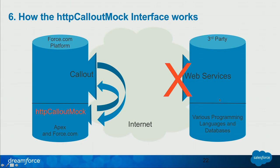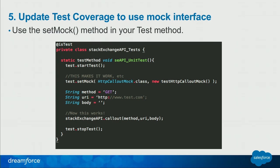On a high level, when we run our tests, instead of going out to the internet and calling the other web service for real, we stay inside the platform and call this mock callout interface instead. You use the test.setMock method to pass in an instance of this class. You can set multiple mocks but it's the last one set that gets used. You could also be clever and use conditional logic inside your mock — if the request has an endpoint of X, pass back this response; if endpoint Y, pass back a different response. You can set multiple mock interfaces and test different web services.